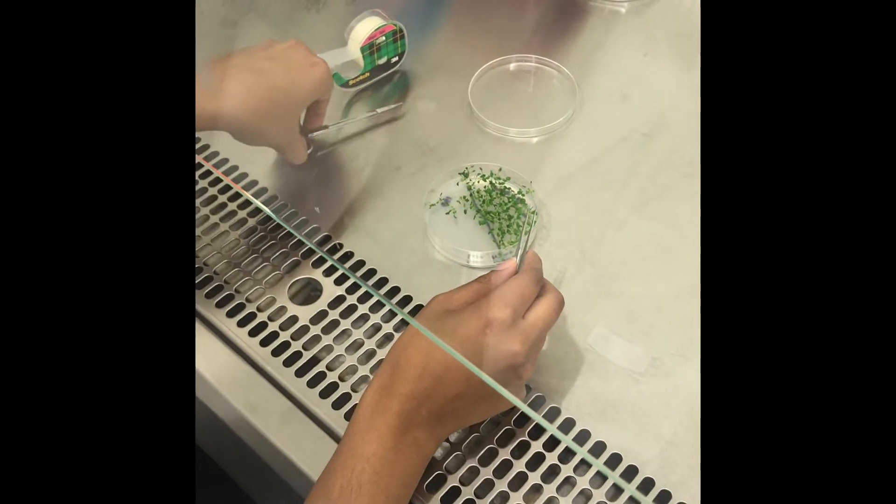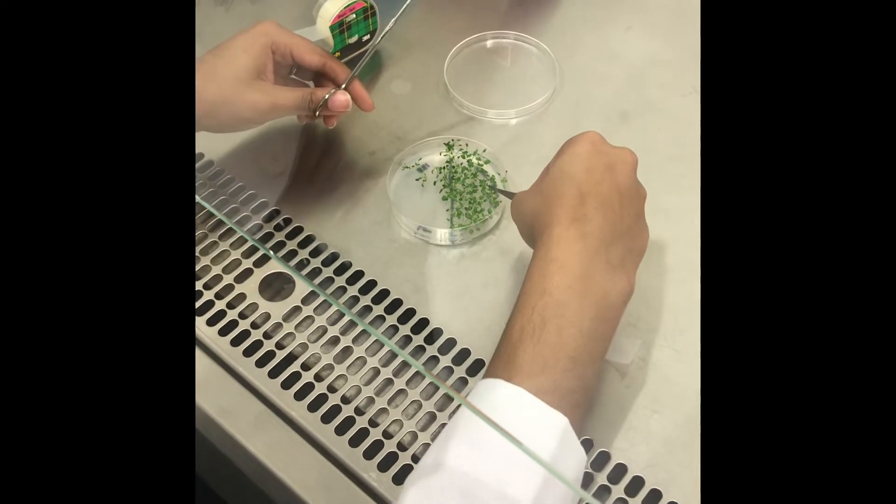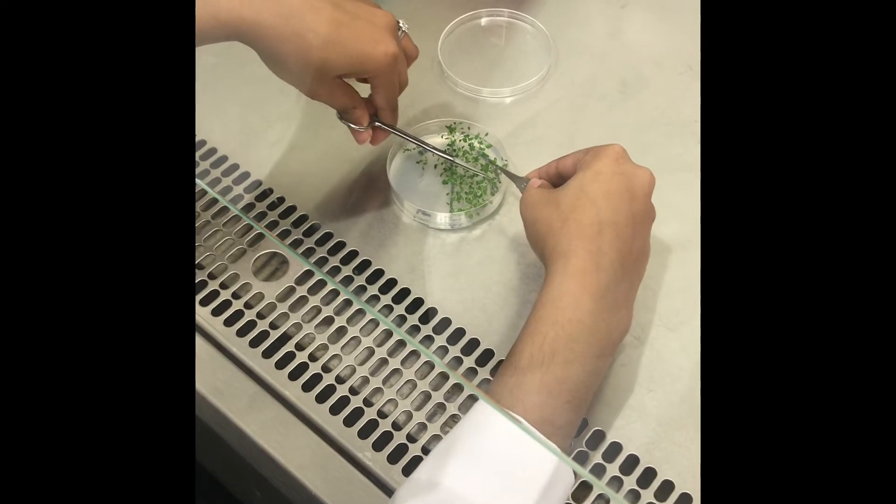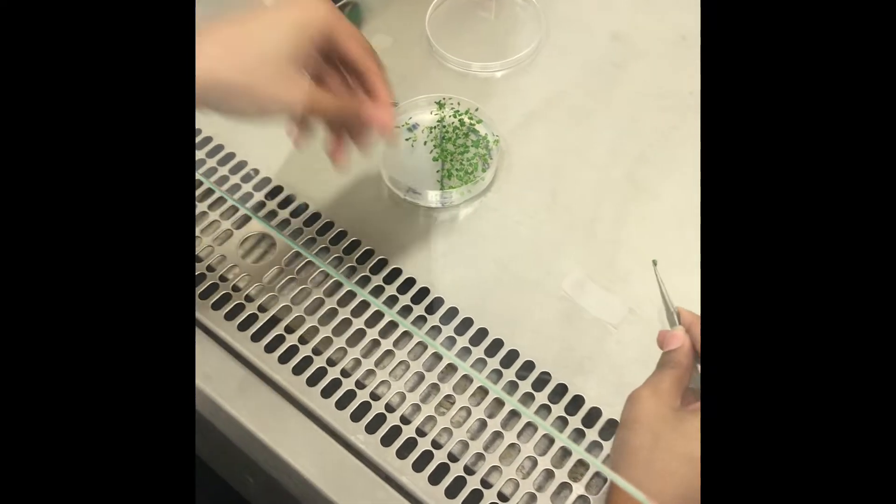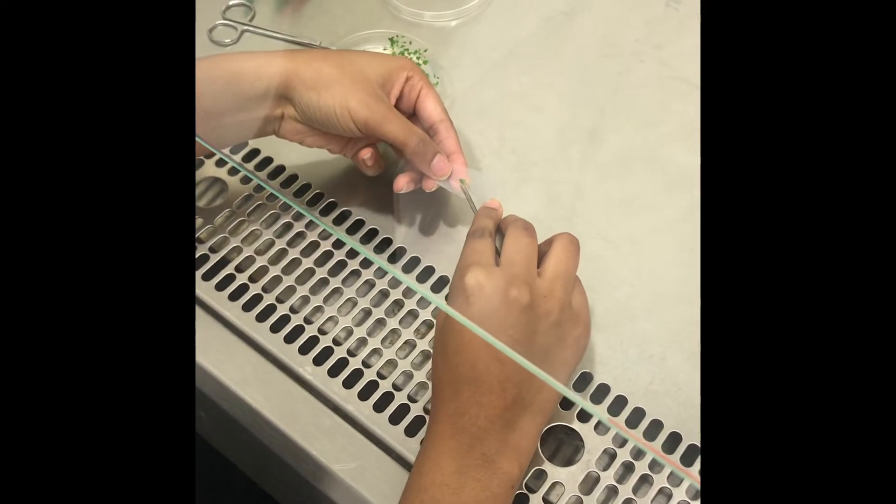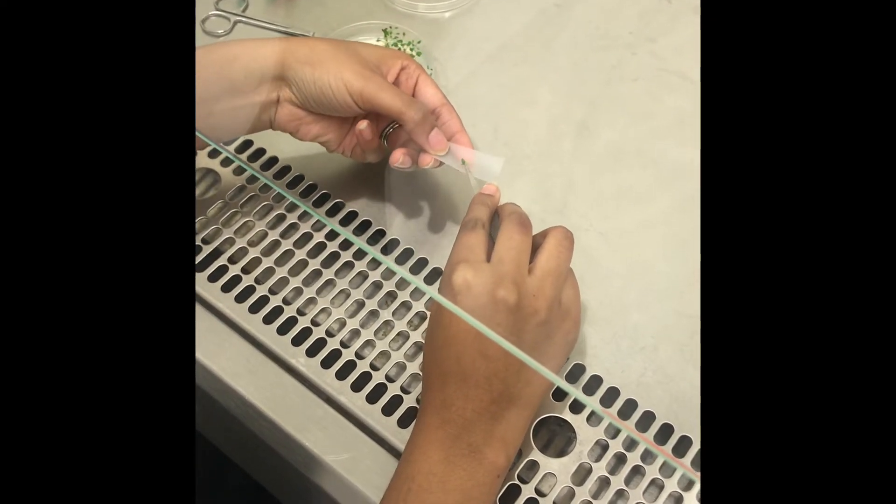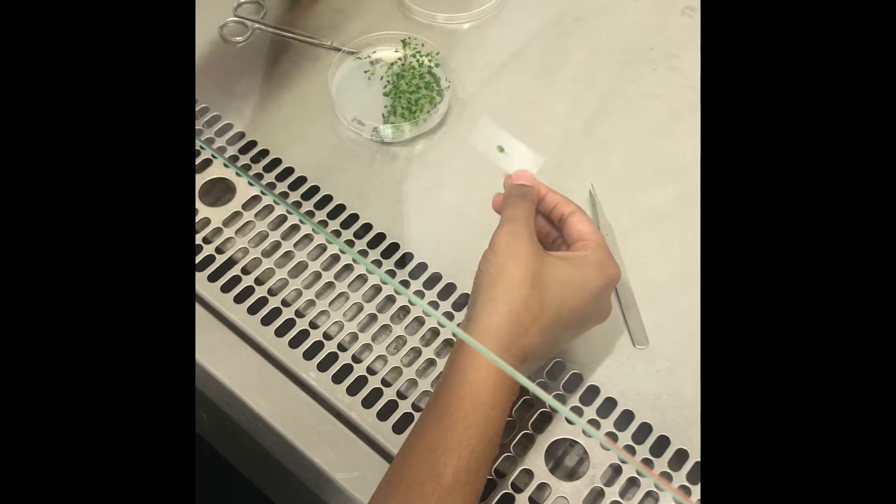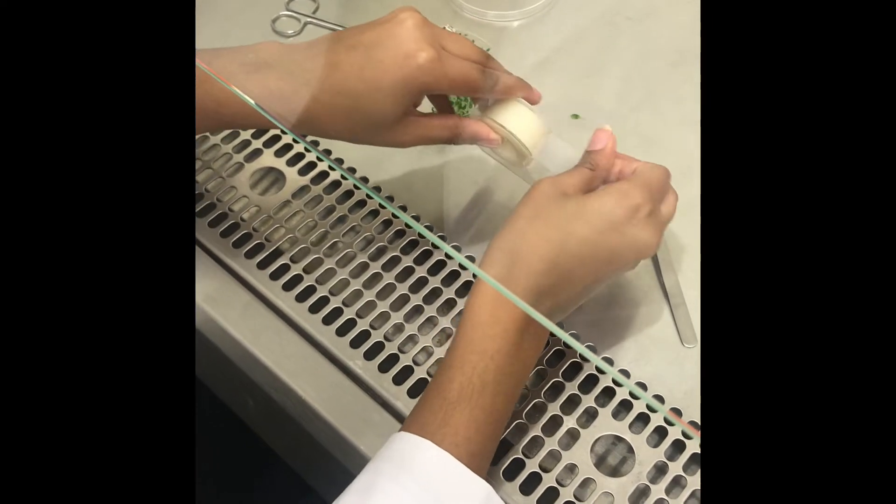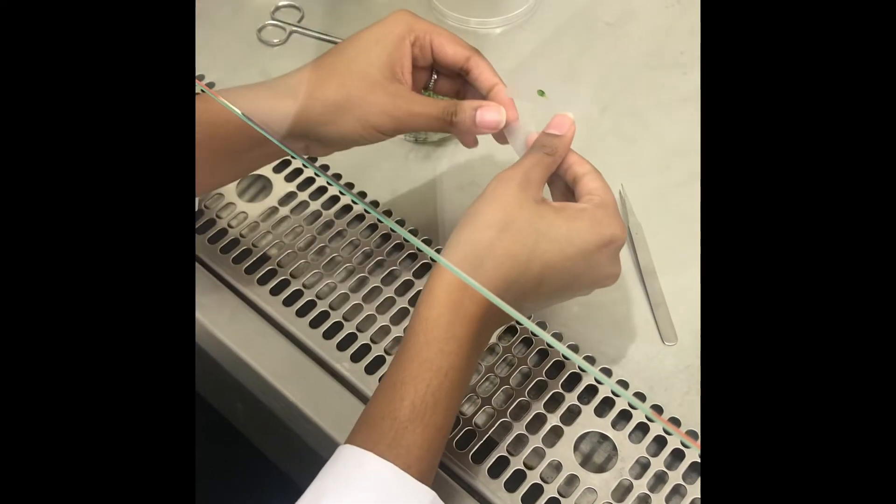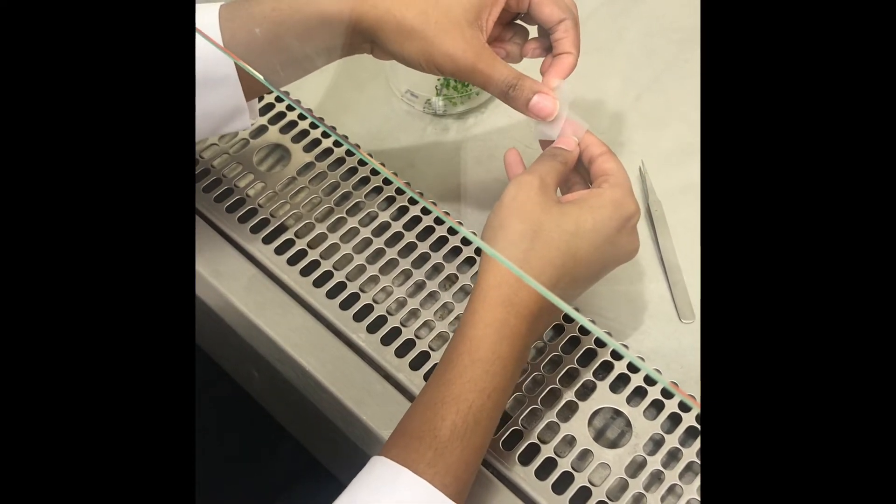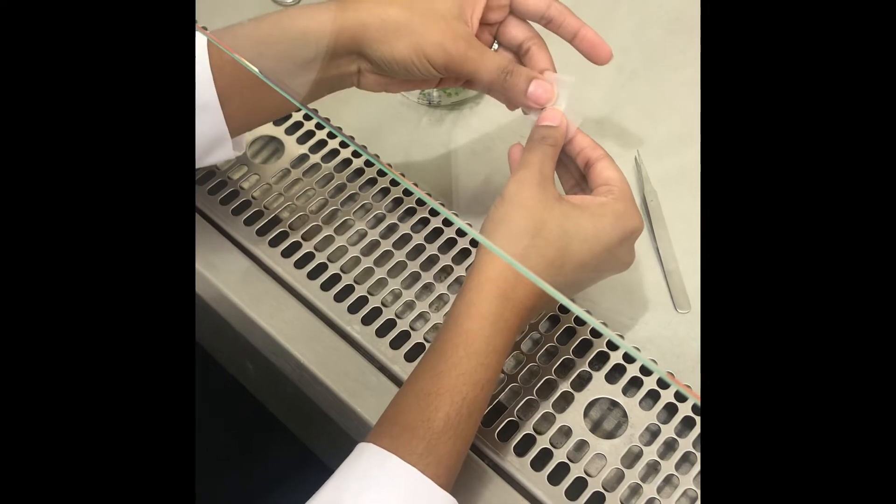So now I'm just going to take a leaf from this petri dish and place it on a piece of scotch magic tape. Now I will take a second piece of tape and place it diagonally across my first piece of tape and I will gently rub it.